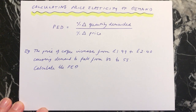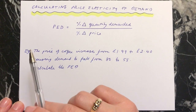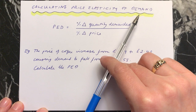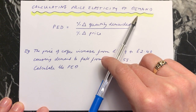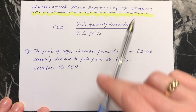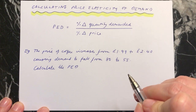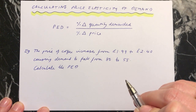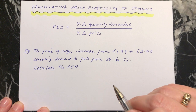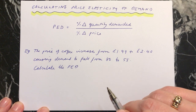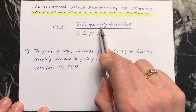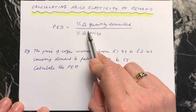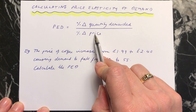Hi everybody. In this video we're going to calculate price elasticity of demand. We're going to work out the value of price elasticity of demand and what the demand curve is going to be like as a result. The formula that you need to learn for this is: percentage change in quantity demanded divided by percentage change in price.